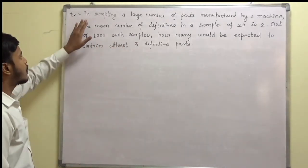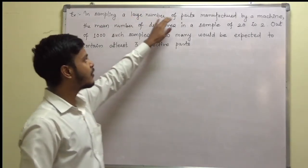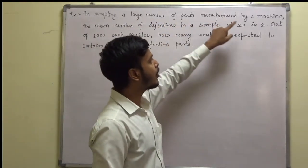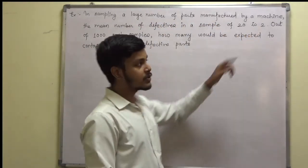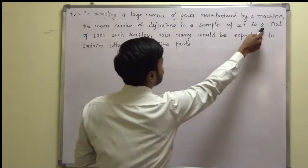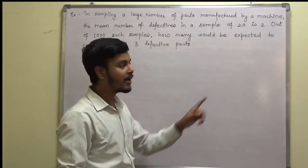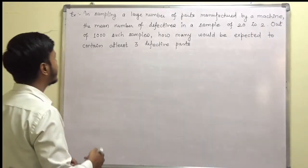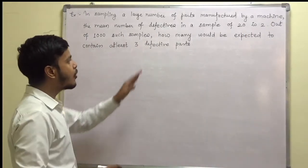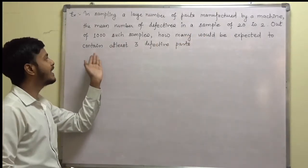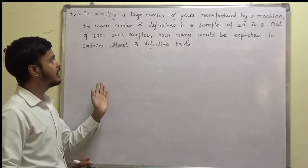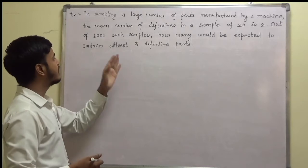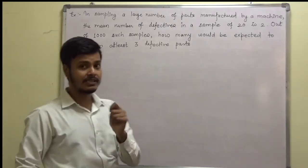So in sampling, a large number of parts manufactured by a machine, the mean number of defectives in a sample of 20 is 2. So my n is 20 and my mu is 2. Out of 1000 such samples, how many would be expected to contain at least 3 defectives?